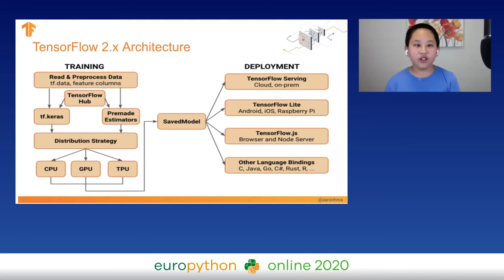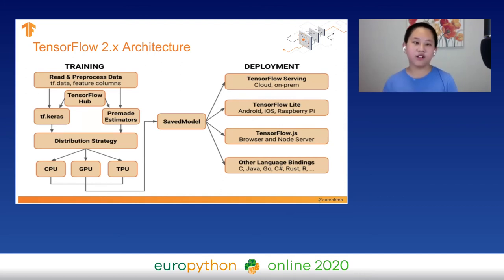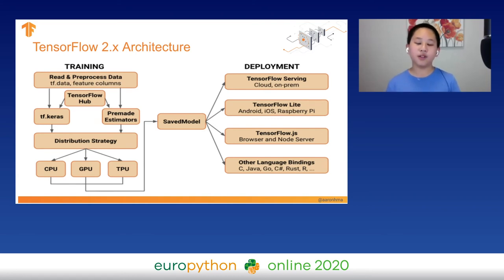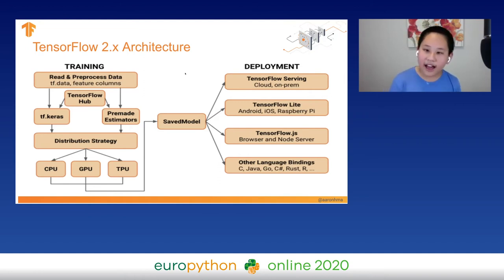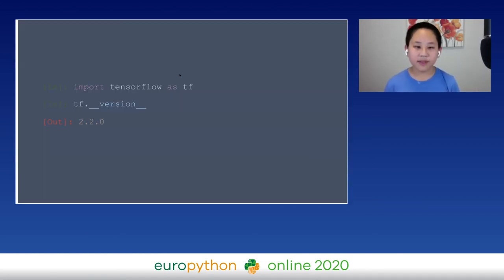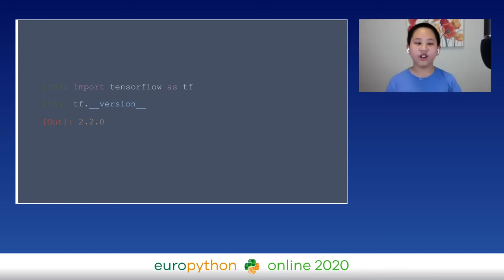The architecture of TensorFlow 2 is pretty straightforward: read and preprocess your data, then use Keras or a premade estimator to build and compile your model, then train using the distribution strategy to take full advantage of your CPU, GPU, and TPU. Once done training, you can use SavedModel to deploy to cloud, on a phone, in a browser, or other TensorFlow language bindings. Here's your first hello application in TensorFlow — import TensorFlow as tf, print out the TensorFlow version, and here I'm on the latest version, 2.2.